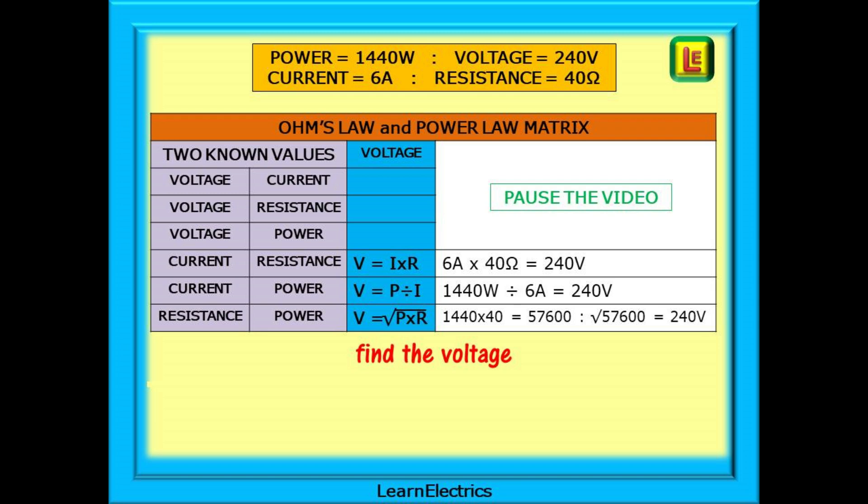On this first example, we want to find the voltage, and the matrix shows that there are three possible combinations to achieve this. We've shown you the working out for each one. Pause the video and make sure that you understand the calculation and that you get the same answers.